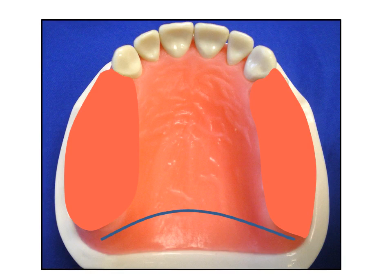Also included in the examination is identifying the vibrating line. This landmark, noted by the blue line, represents the junction between the movable and immovable tissue of the palate. It normally runs from hamular notch to hamular notch and may often be estimated to be 2 mm anterior to the fovea palatinae.